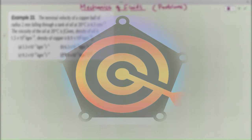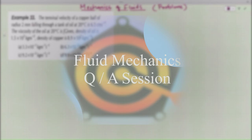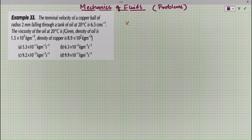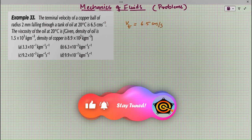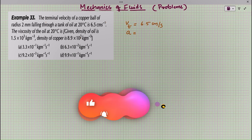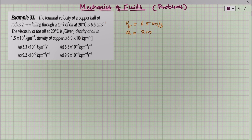We are going to discuss some problems from the chapter on mechanical properties of fluids. The first question is from the topic of terminal velocity, that is, from the portion on viscosity. The terminal velocity of a copper ball falling through a tank of oil at 20°C is 6.5 cm/s, and the radius of the copper ball is 2 mm.